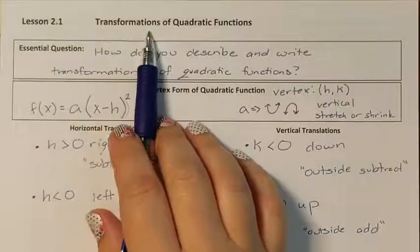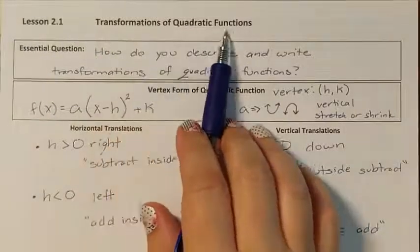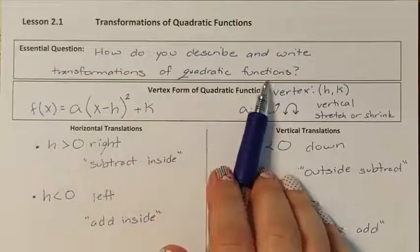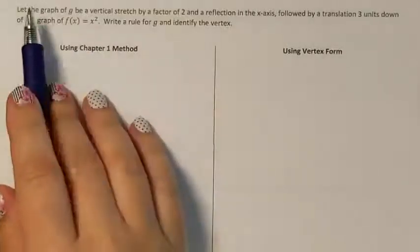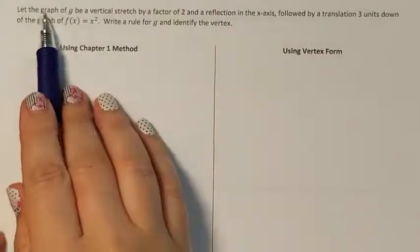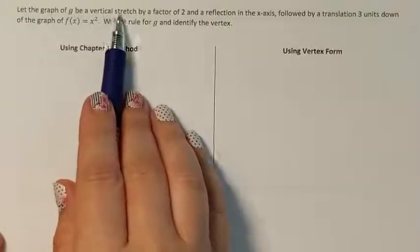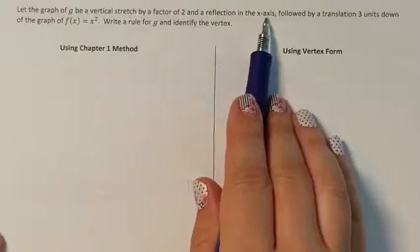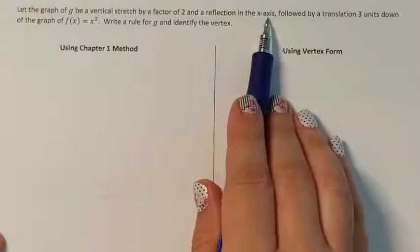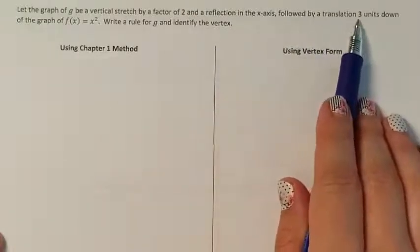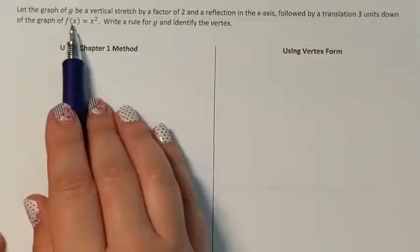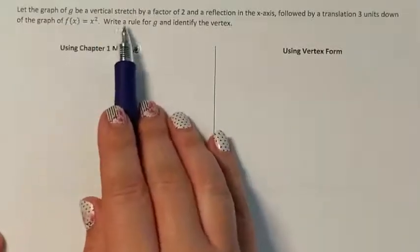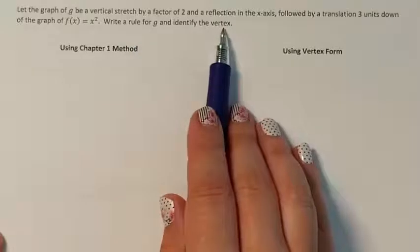Lesson 2.1: Transformations of Quadratic Functions. How do you describe and write transformations of quadratic functions? The problem we're given: let the graph of g be a vertical stretch by a factor of 2 and a reflection in the x-axis, followed by a translation three units down of the parent quadratic function. Write the rule for g and identify the vertex.